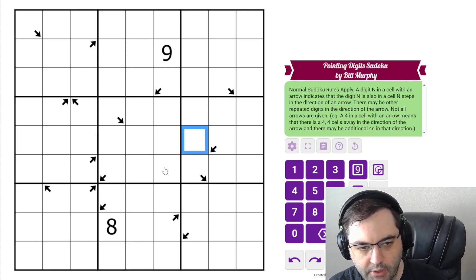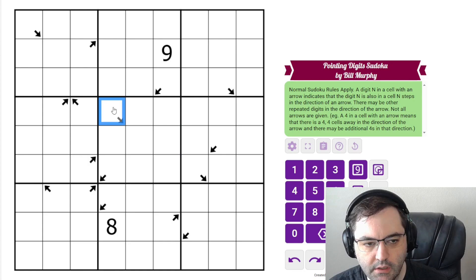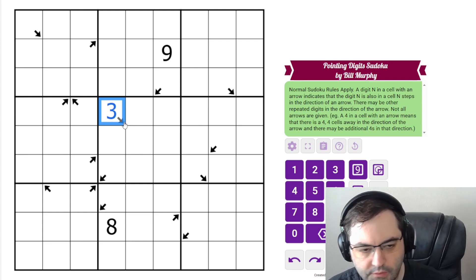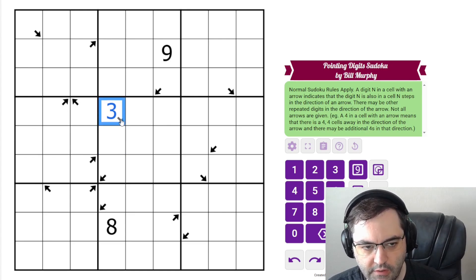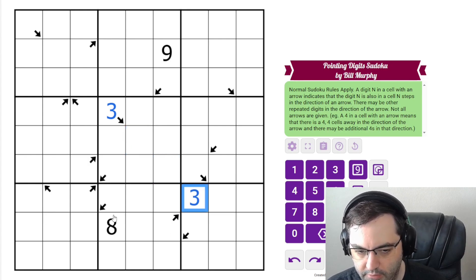A digit in the arrow, let's say this is a 3, 4 is in the example but just to be different. Whatever digit is in this cell, because there's an arrow, the arrow is telling us that that digit also appears that many cells away. So 1, 2, 3, there's another 3 here.